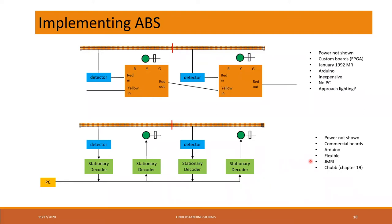For software, JMRI is an option. You could also go to Bruce Chubb's material, which I've referenced at the back. If you understand basic code, you could generate an ABS system from what he's done.